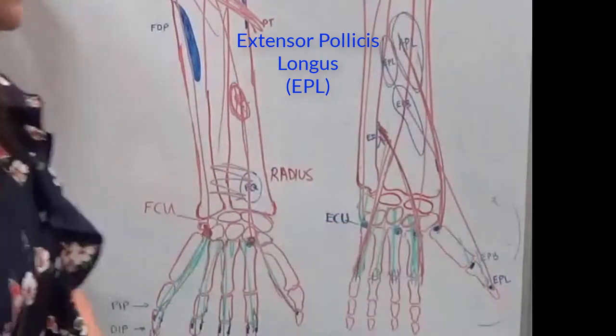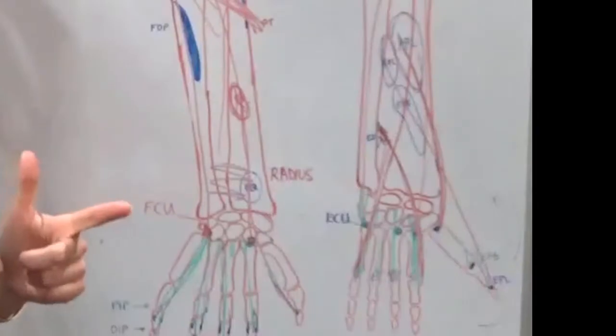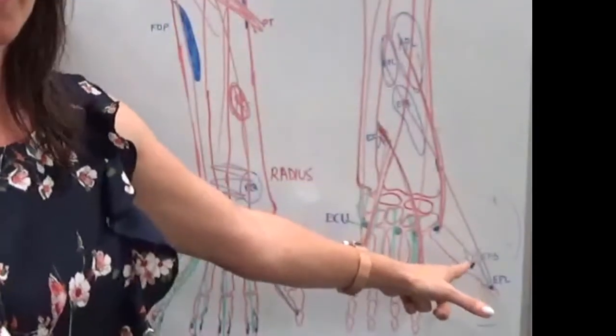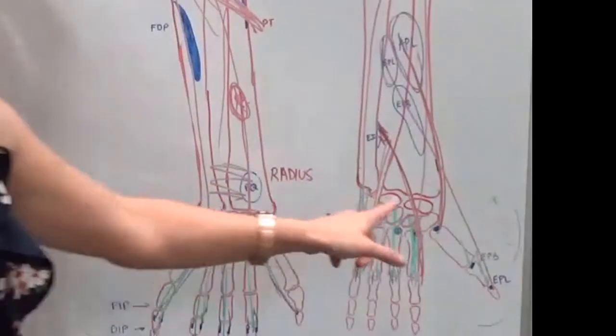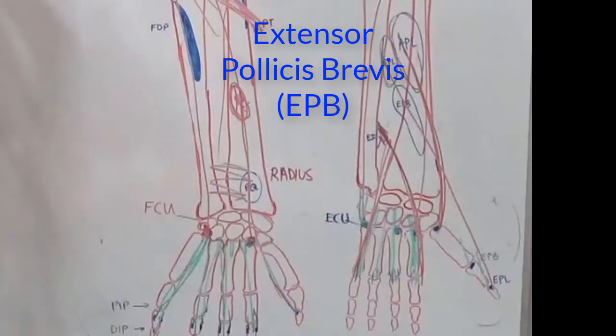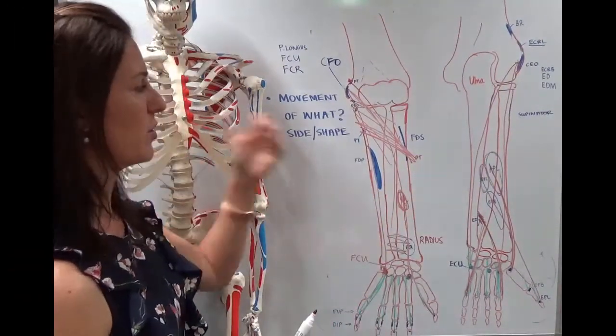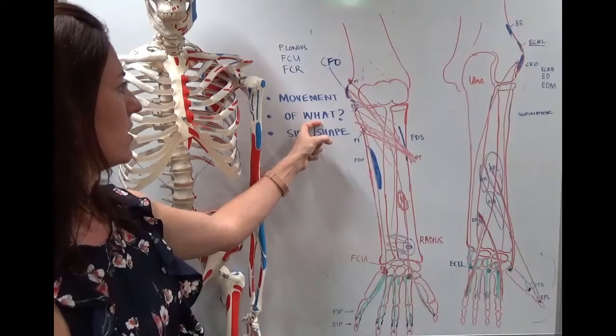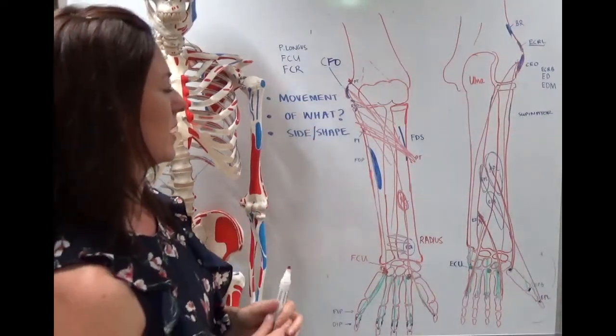The next one you can name yourself, movement first, extensor, of what, extends the thumb, so we call it pollicis, and it wasn't the longest version, so it must be the short version, which is the brevis. So in a nutshell, that's how you name things, movement first, of what, and then side or shape, longus brevis, superficialis, deep.